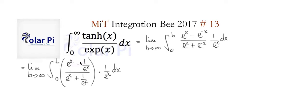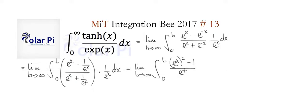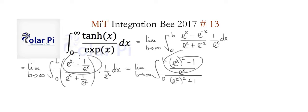Let's do a little bit more algebra: find common denominators and distribute this e^x. The common denominator step gives us this expression, and then distributing this e^x to these terms turns e^x into e^(2x) and this term into a one. So we'd have that.